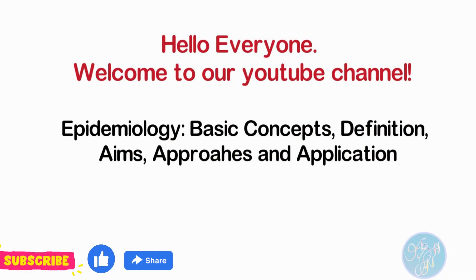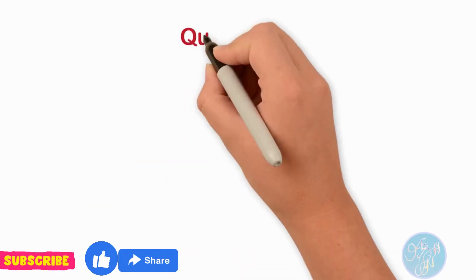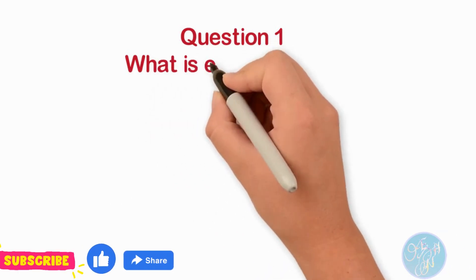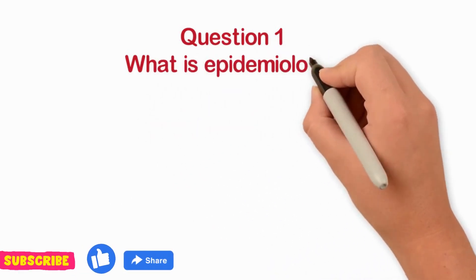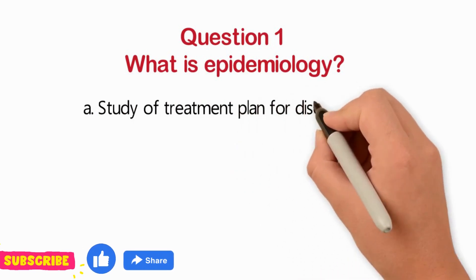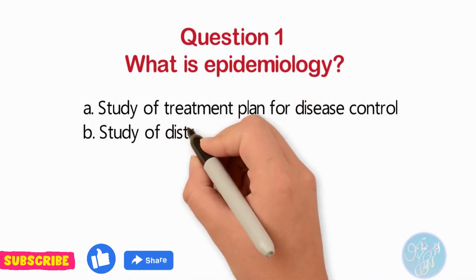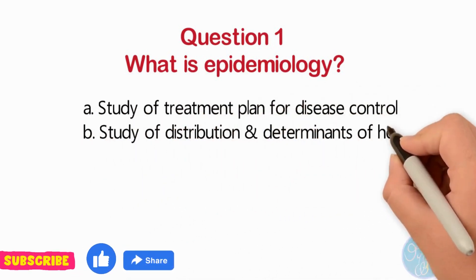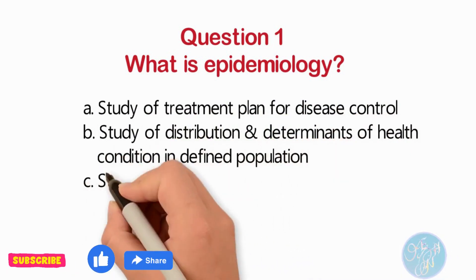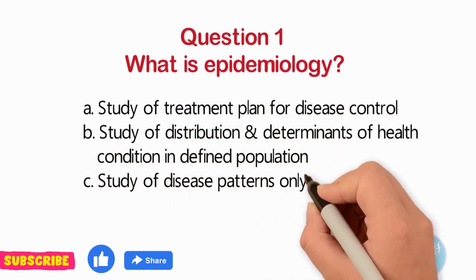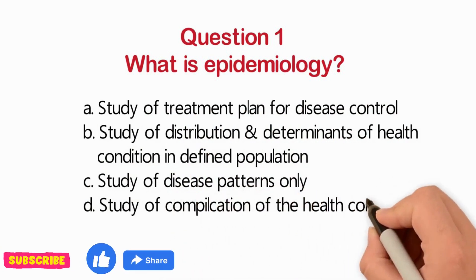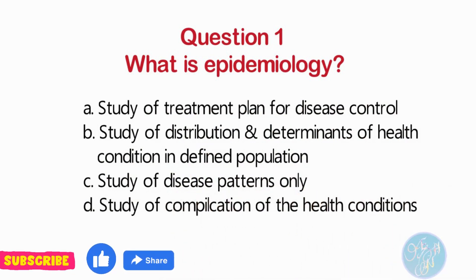Before entering the core topic, let me ask you a few questions regarding it. Question 1: What is epidemiology? Option 1: Study of treatment plan for disease control. Option 2: Study of distribution and determinants of health conditions in a defined population. Option 3: Study of disease patterns only. Option 4: Study of complications of health conditions. Please brainstorm and write your answer down in your study sheet.